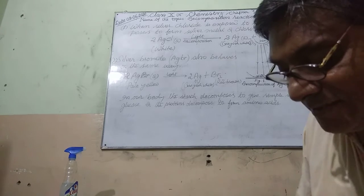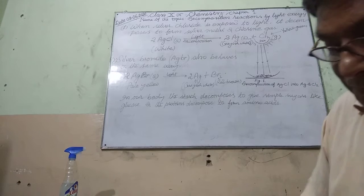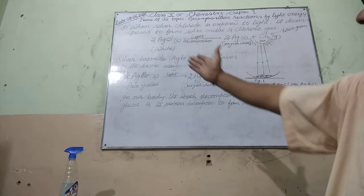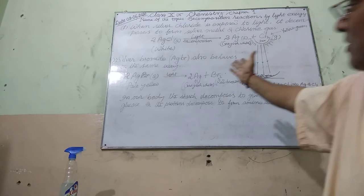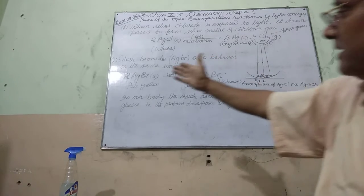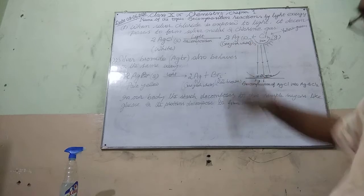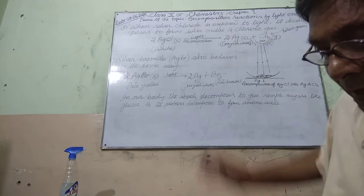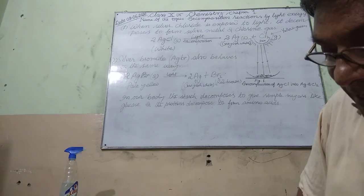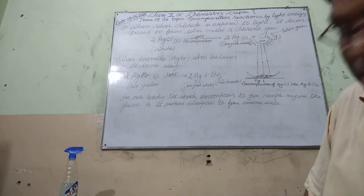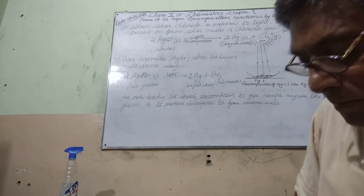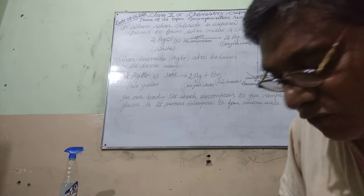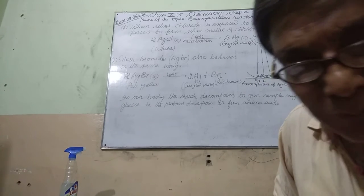Silver bromide also behaves in the same way as silver chloride with light energy. Therefore, when silver bromide is exposed to light, it decomposes to form silver metal and bromine vapour.